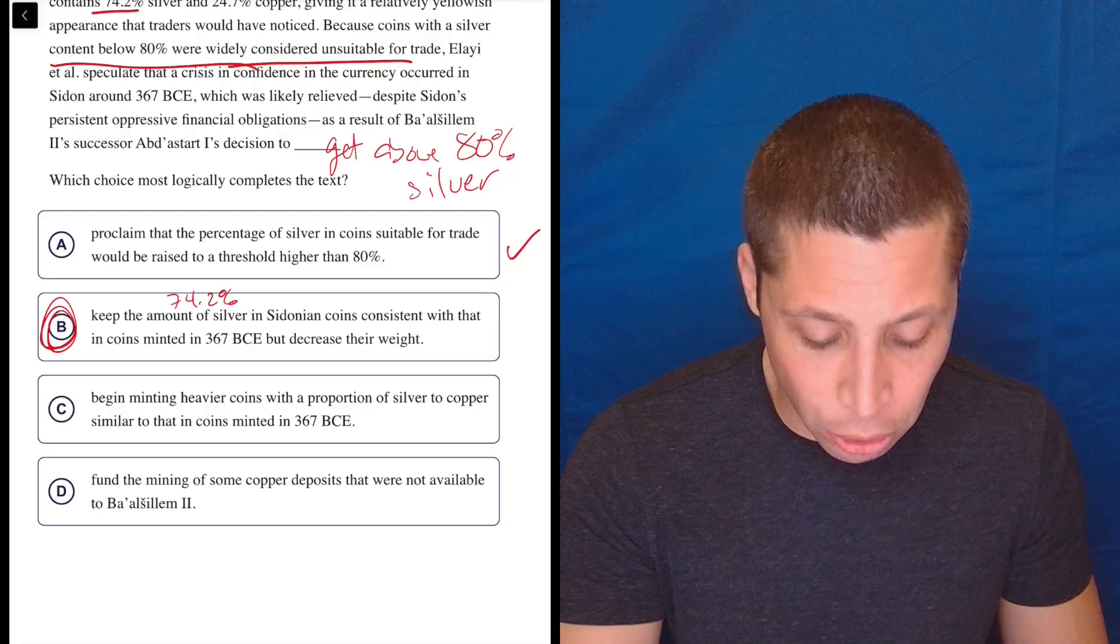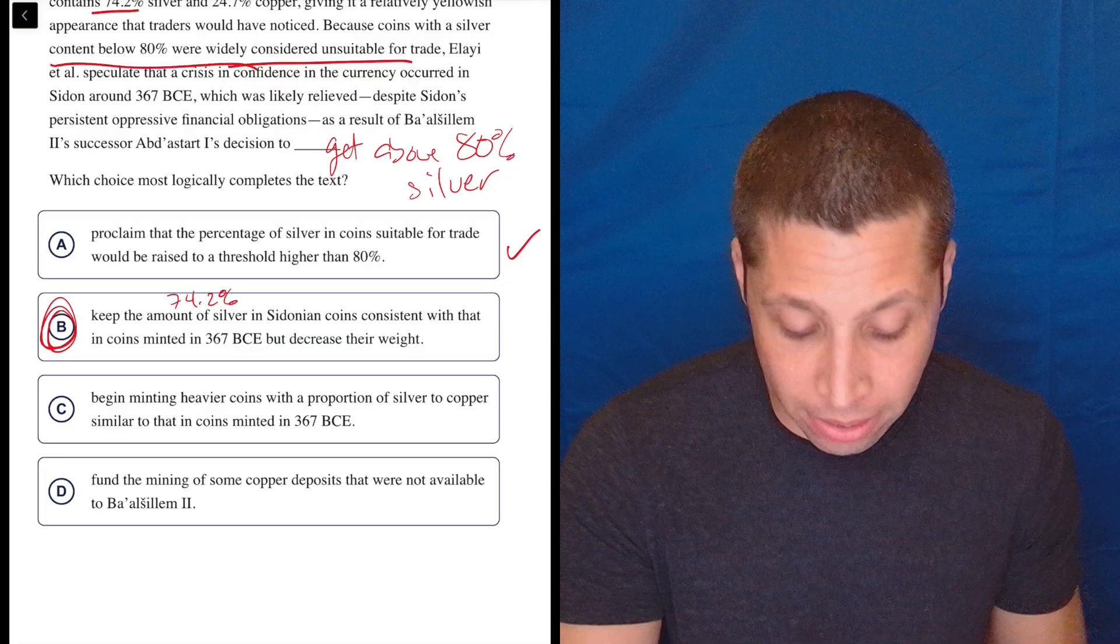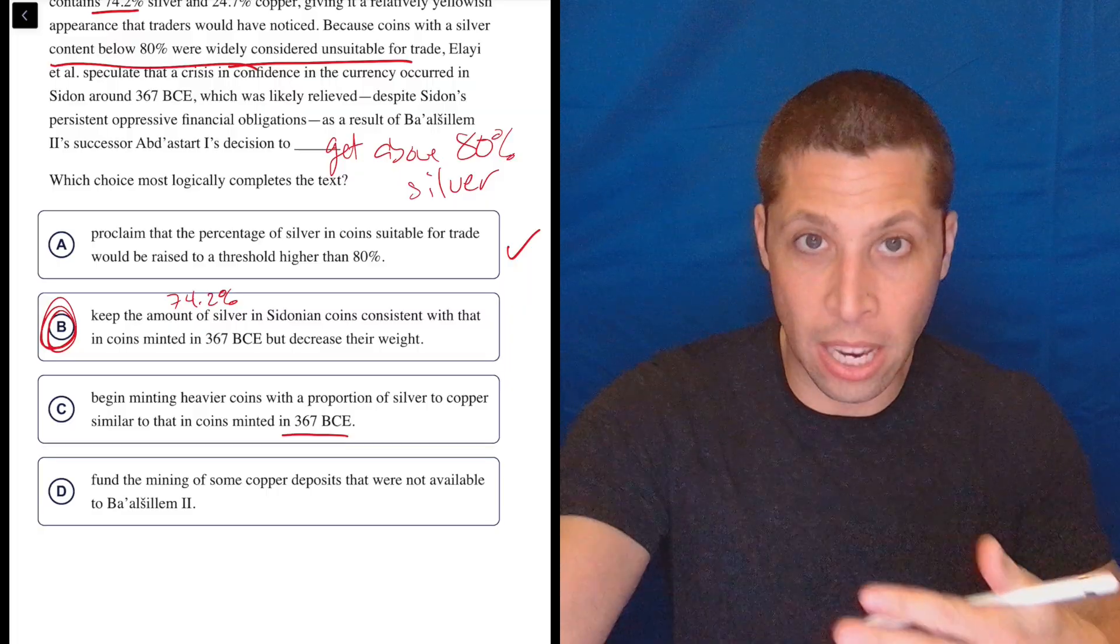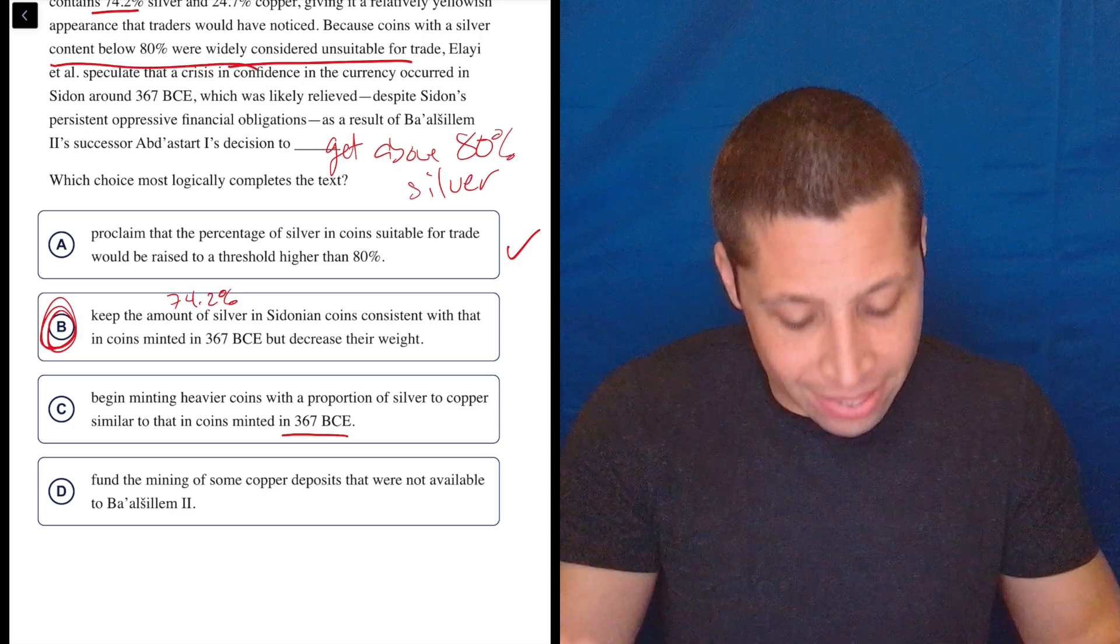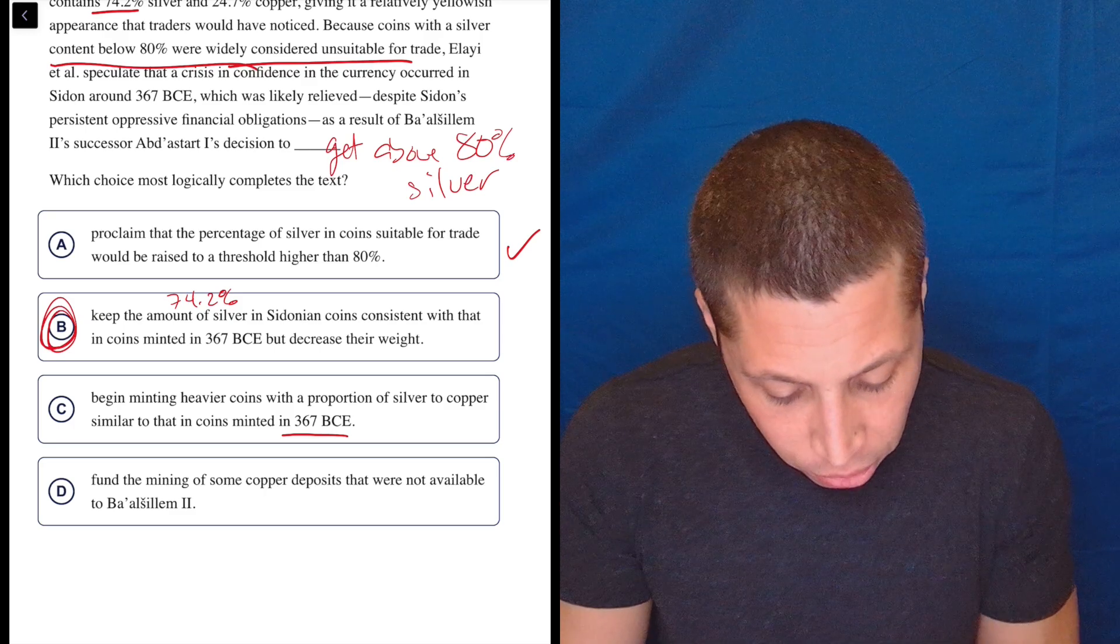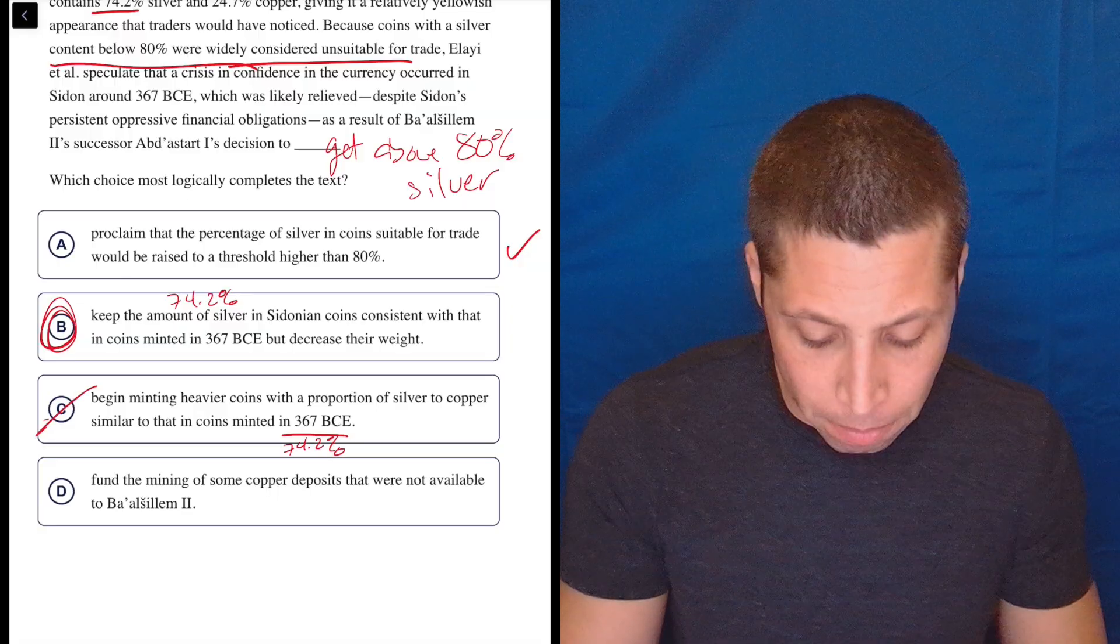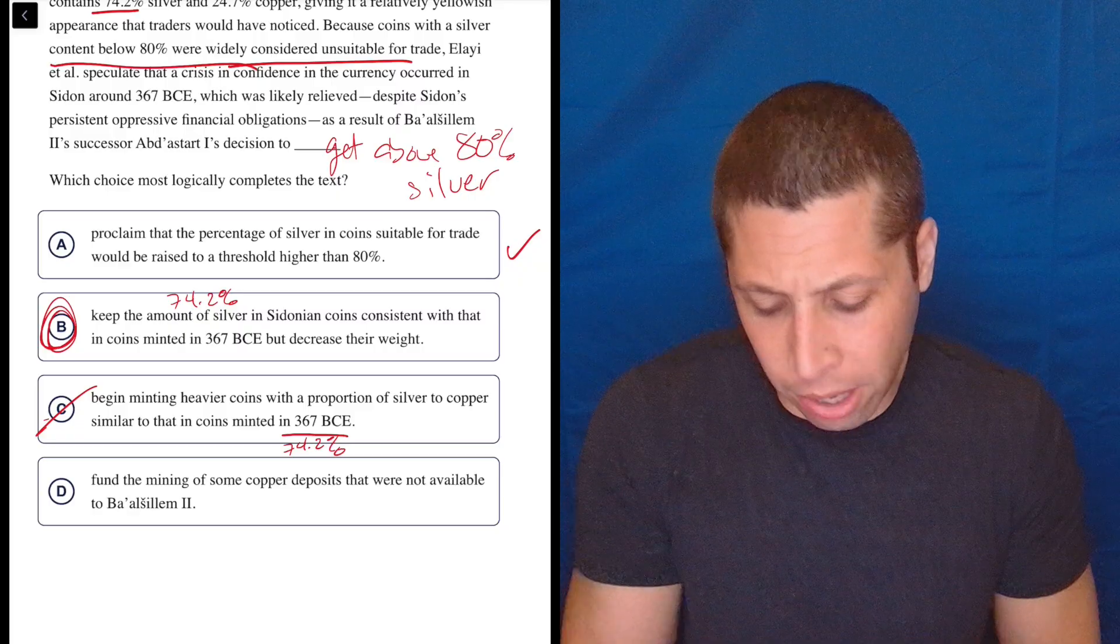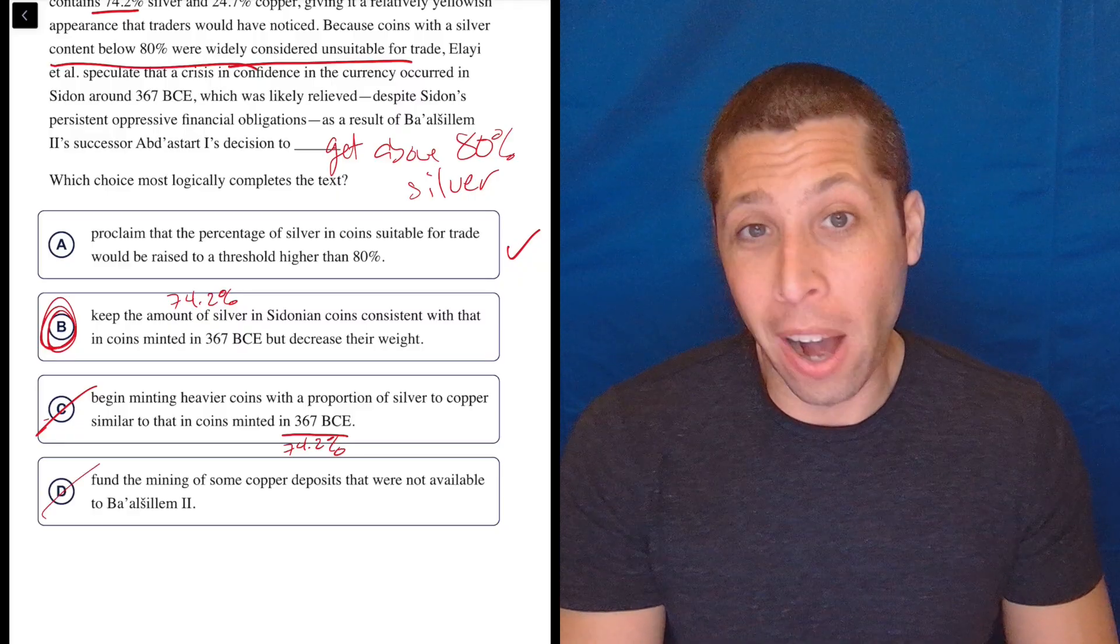Let's continue. C. Begin minting heavier coins with a proportion of silver to copper similar to that in coins minted in 367 BCE. Well, again, that sounds like it's continuing the problem because what is the proportion? Just because it's a heavier coin, if it's not above 80%, it's no good. So this would still be 74.2%. That seems wrong to me. D. Fund the mining of some copper deposits that were not available. Who cares? I don't care about copper. I care about silver. So again, I would have just picked A and moved on.